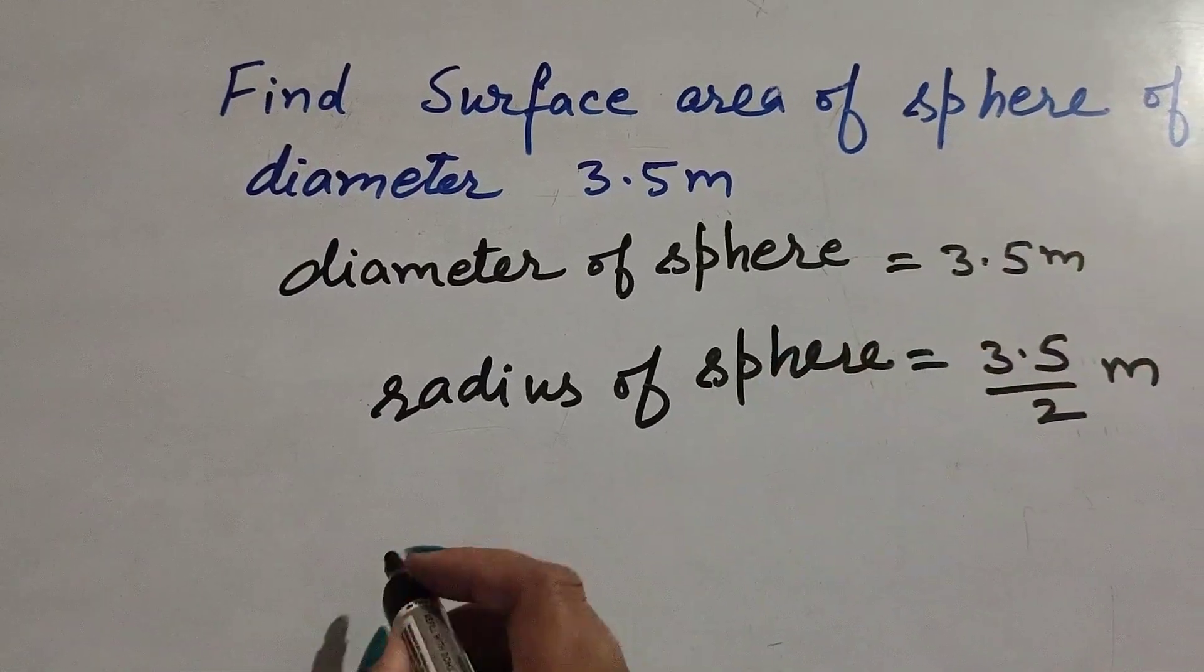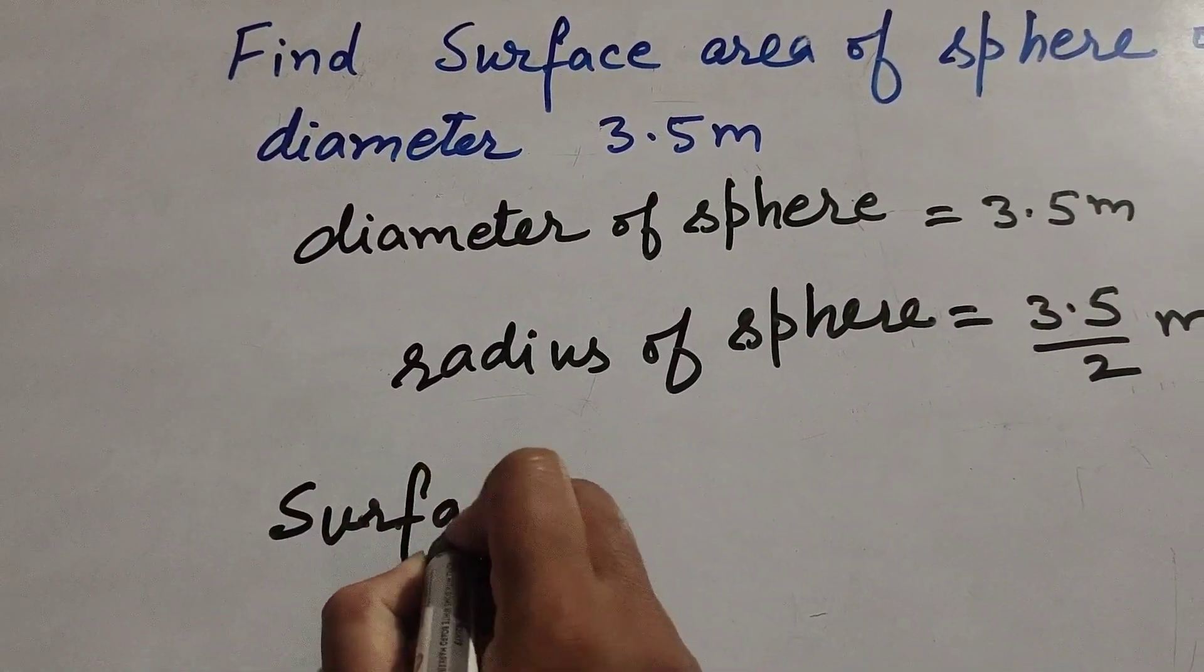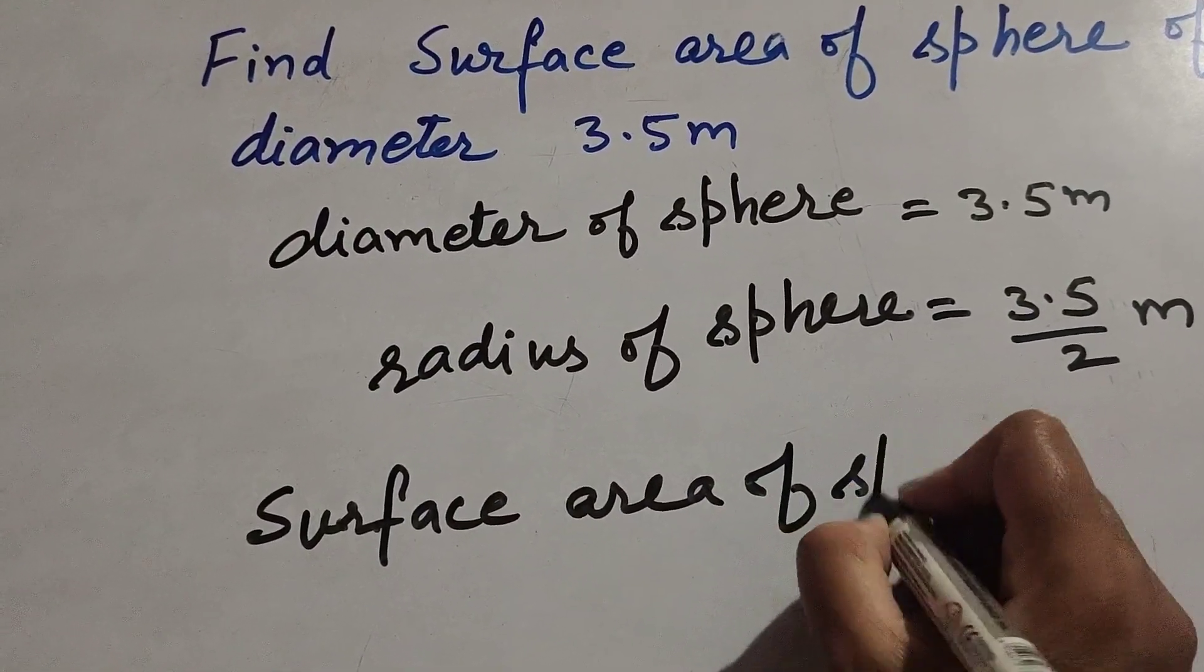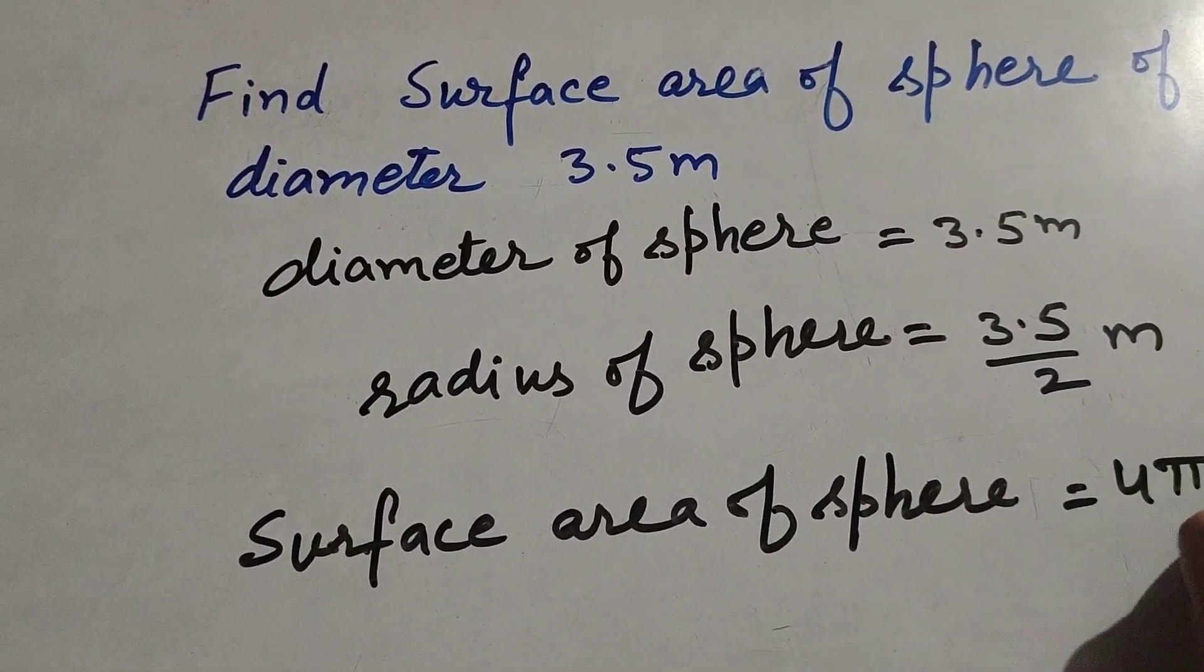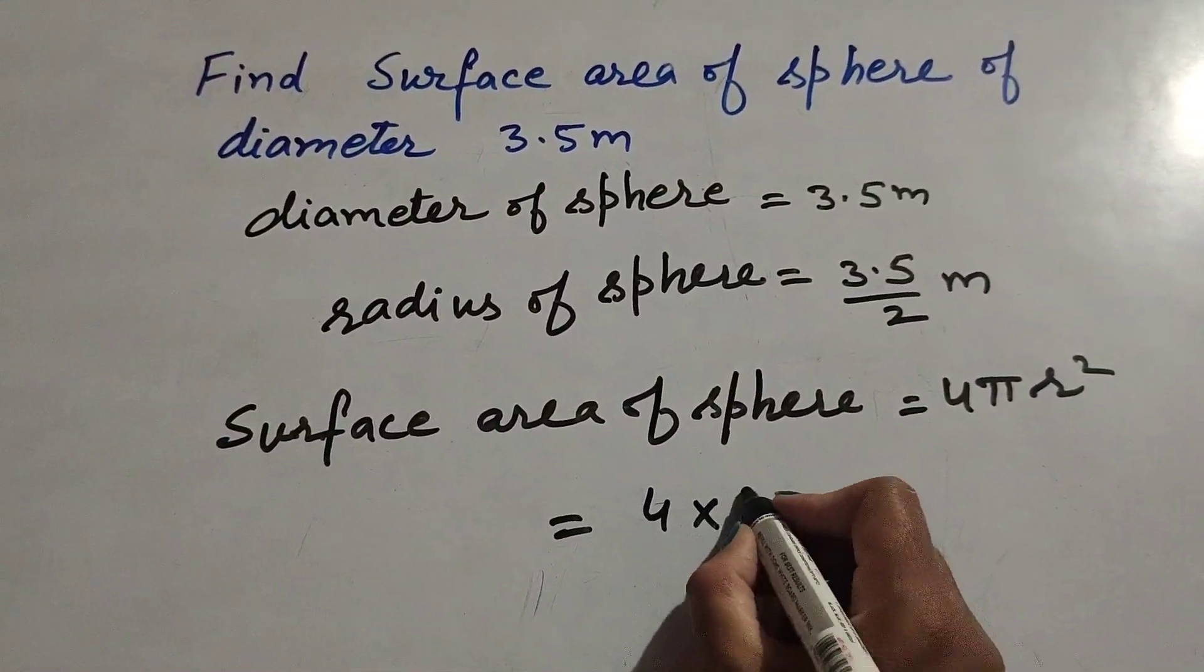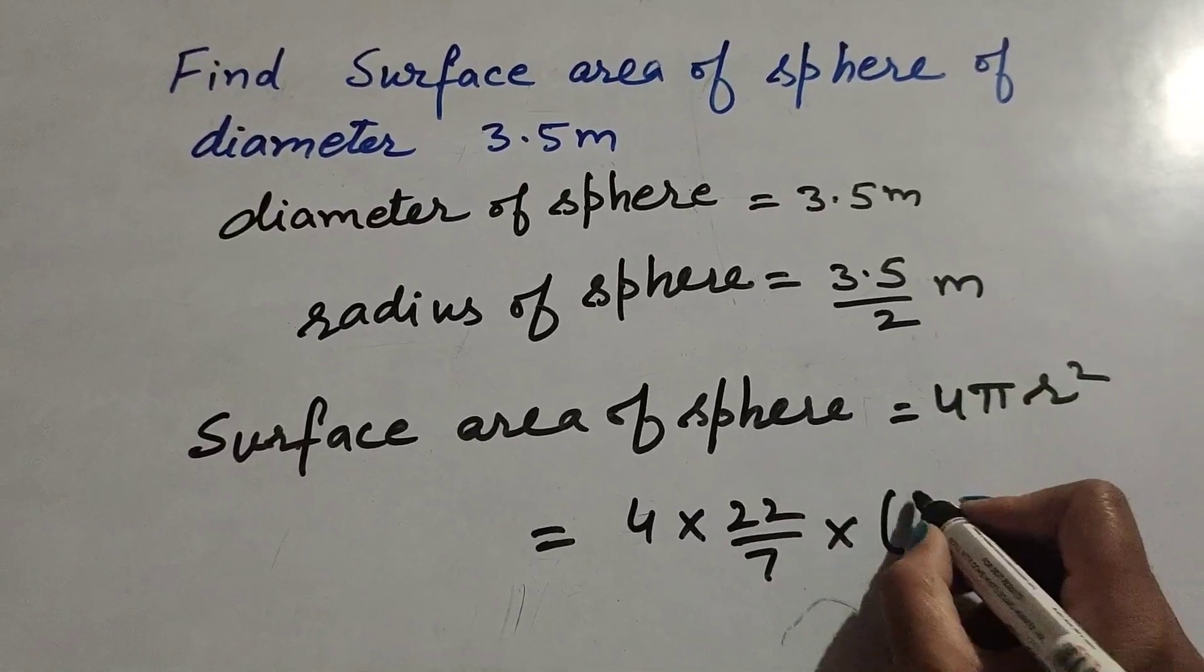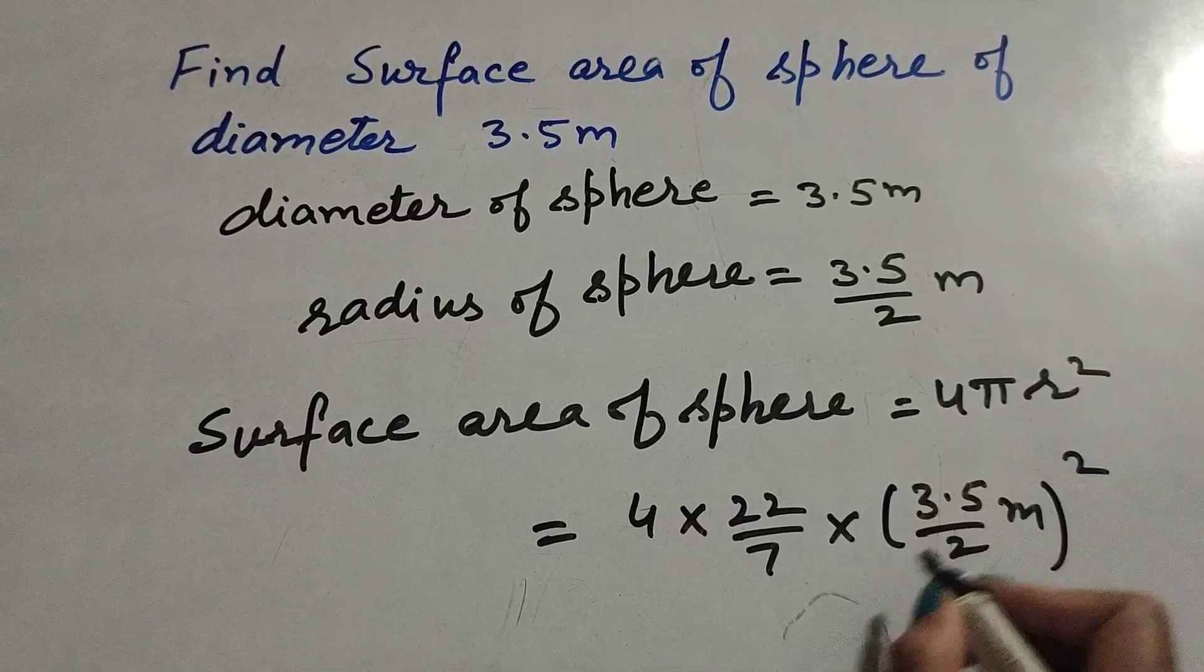Now we find surface area of sphere. We know the formula to find surface area of sphere, it is 4πr². 4π, its value is constant 22 over 7, multiply r square where r is 3.5 over 2 meters squared.